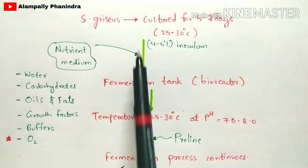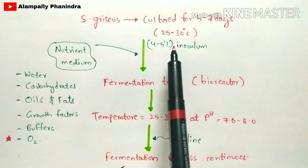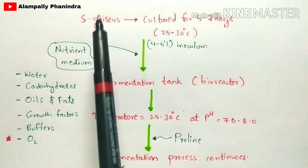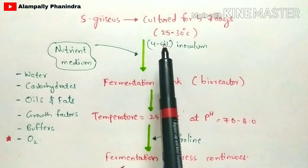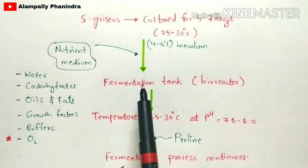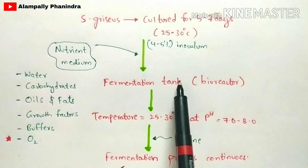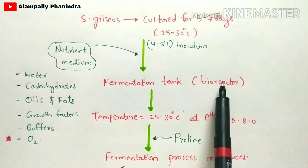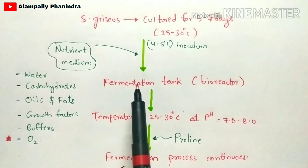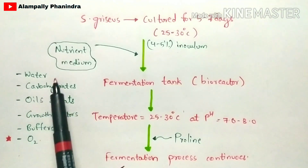Next, 4 to 5 percent of the prepared inoculum will be added into the fermentation tank, which is also called the bioreactor tank. Along with this inoculum, you are also going to add the nutrient medium.